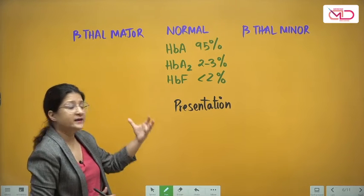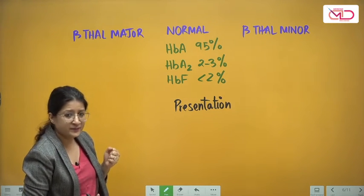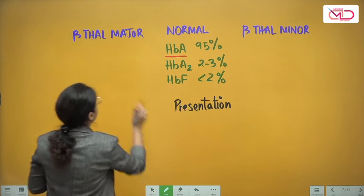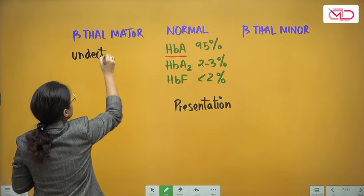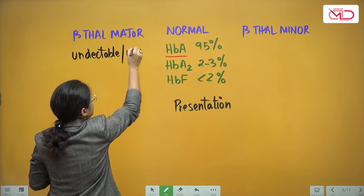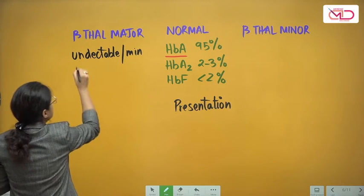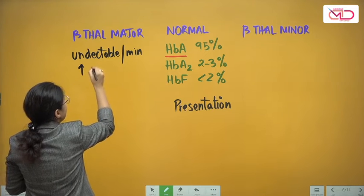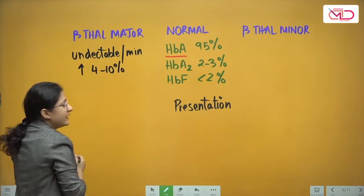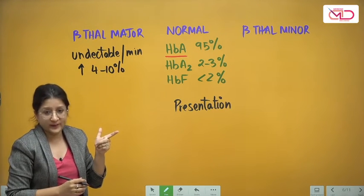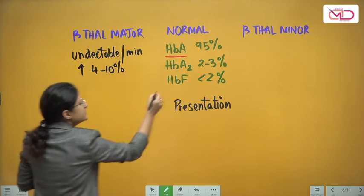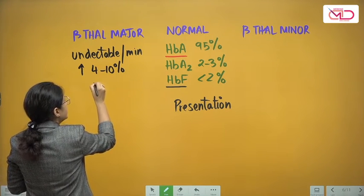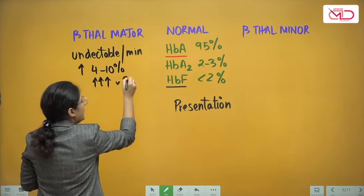The normal values of hemoglobin A, A2, and F are shown here on the slide for adult life. In beta thal major, hemoglobin A levels are going to be undetectable or very minimal. HbA2, the alpha-2 delta-2 chain form, is slightly elevated — about 4 to 10 percent. The predominant form of hemoglobin in beta thal major becomes hemoglobin F, with persistence of fetal hemoglobin markedly increased to about 96 percent in circulation.